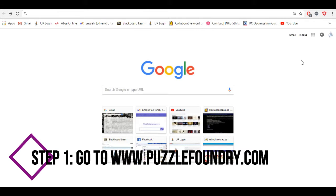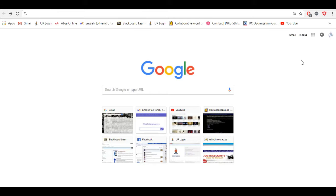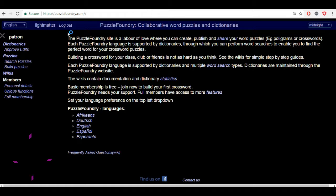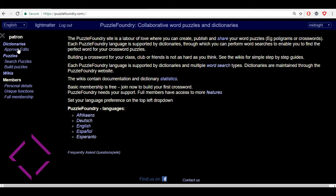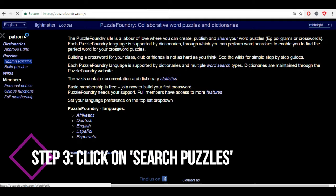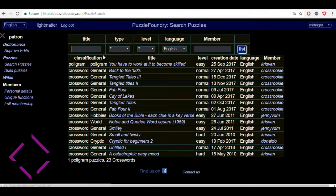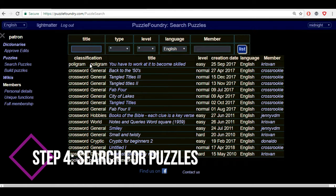The first thing you do if you want to solve crosswords on our site is go to www.puzzlefoundry.com, then you can log in or create your own user account, and if you want to, you can go to search puzzles here on the left side of the page. The search puzzle function will give you a list of all the puzzles or most of the puzzles at least on our site, and you can go ahead and search for any puzzles using the title bar up here.